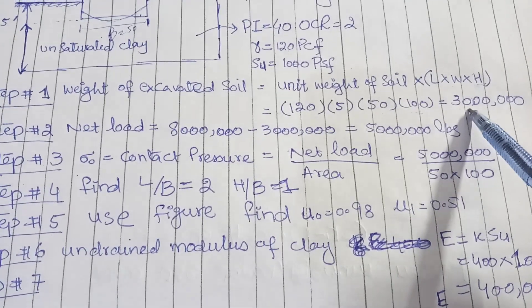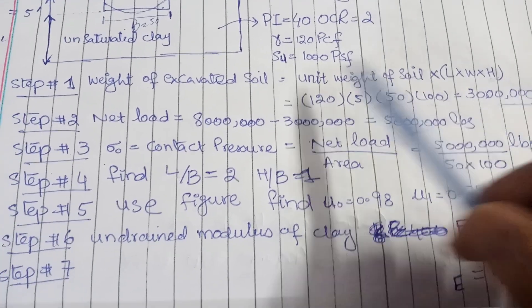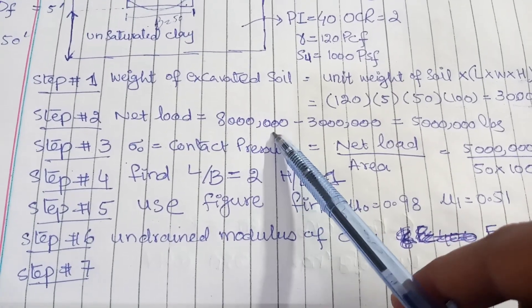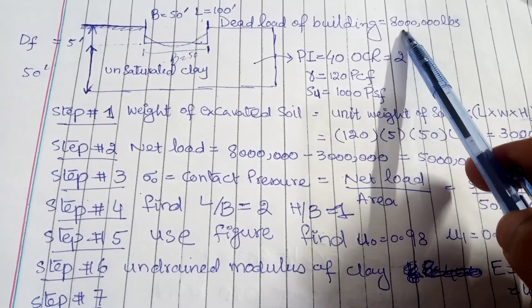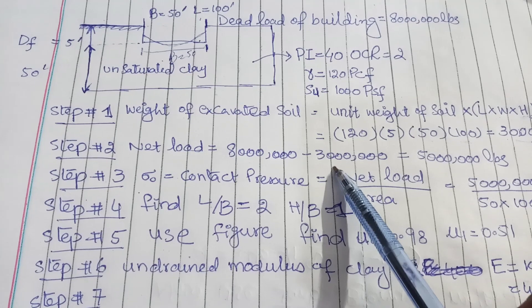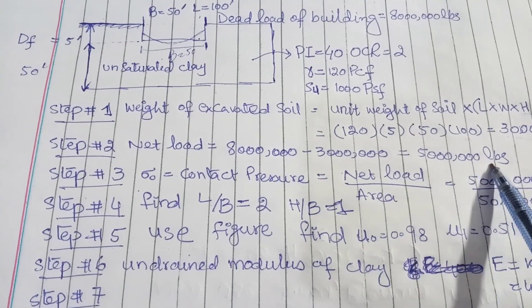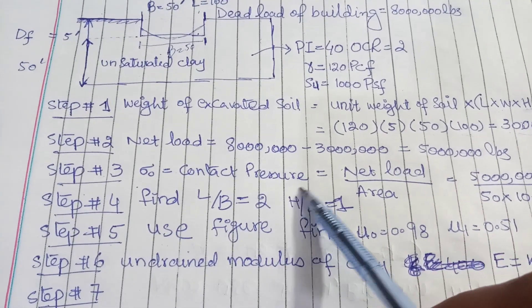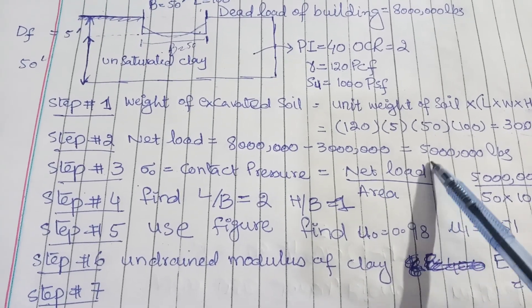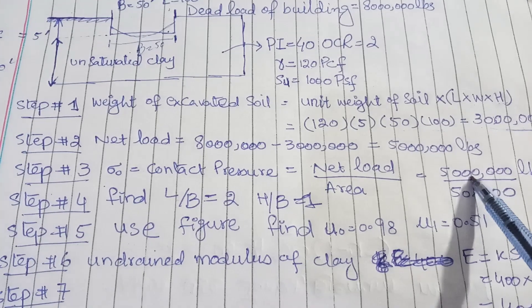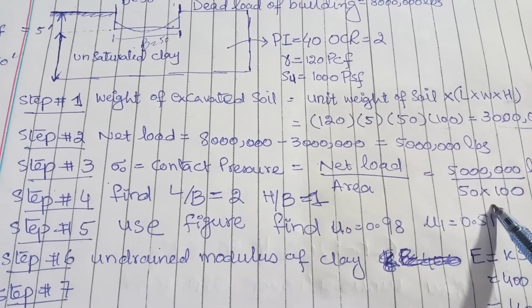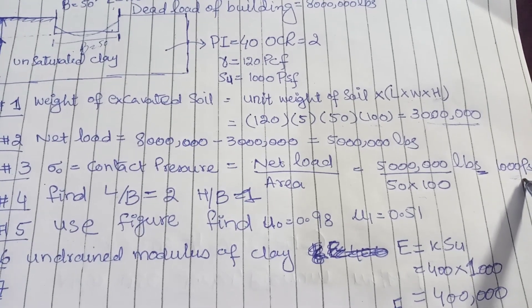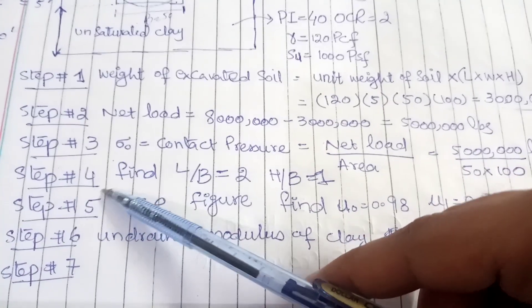Step 2: now we calculate net load. Net load is 800,000, this 800,000 is dead load of building, and we subtract 300,000. It will be equal to 500,000 pounds. So this is the net load. Now step 3: we will calculate contact pressure. Contact pressure formula: net load over area. What is the net load? 500,000 is the net load, so we divide it with the area of foundation 50 × 100. So it will be equal to 1000 PSF.